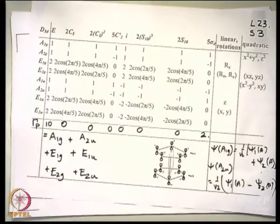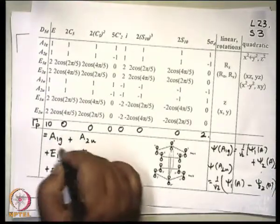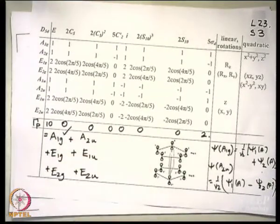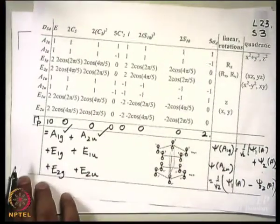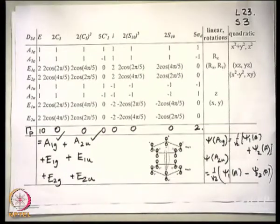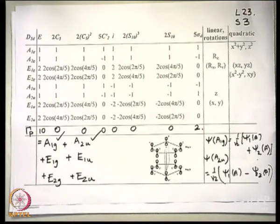So now you tell me, you have broken down that reducible representation. A1g is accounted for, we have worked out the wave function for A1g. We have found what is A2u. Next we want to know what is E1g, what is E1u, what is E2g, what is E2u. How will I do it?